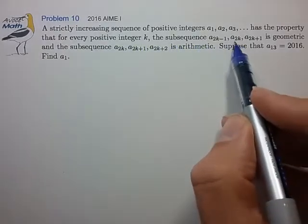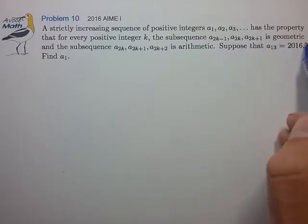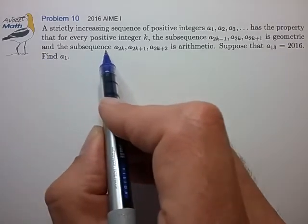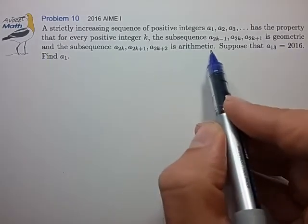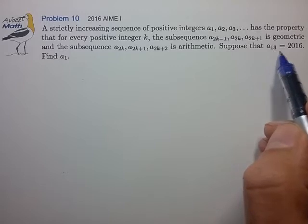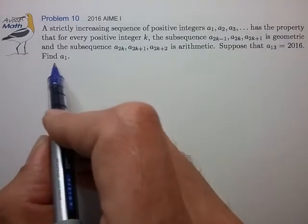the subsequence centered around an even index is geometric and the subsequence centered around an odd index is arithmetic. Suppose that A13 is 2016. Find A1.